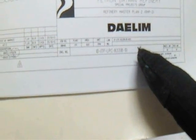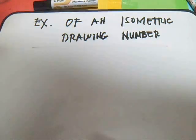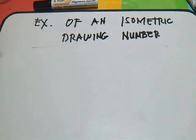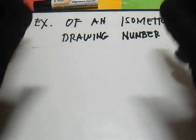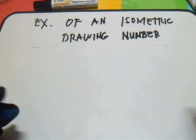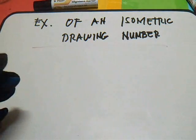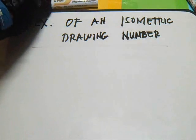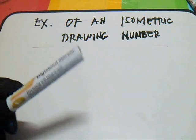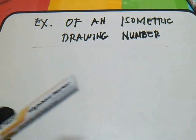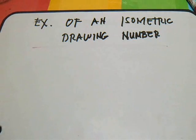So how can you identify which is the plant area, which is the fluid, which is the nominal pipe size, which is the line size, the ISO number, the material specification, and also the spool number? I'll teach you.